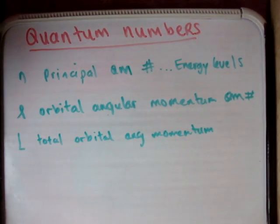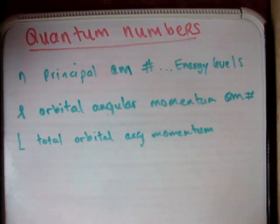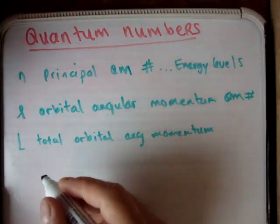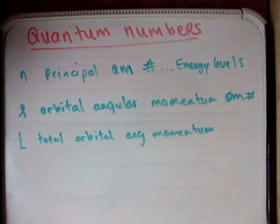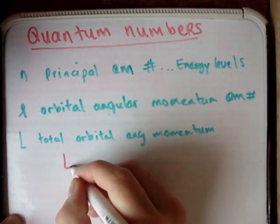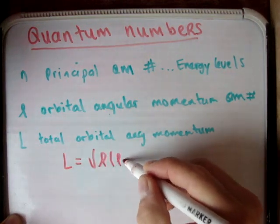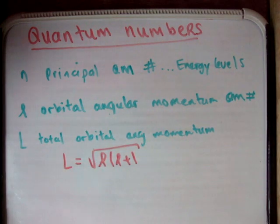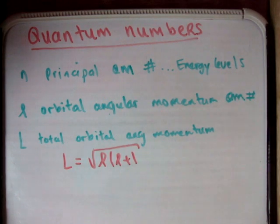Now the total angular momentum is not itself a quantum number. In order to get the total angular momentum, you must use the orbital angular momentum quantum number, whereby the total angular momentum is equal to the square root of l times (l plus 1), in units of h-bar. So we see that the quantum number allows you to get a physical quantity.